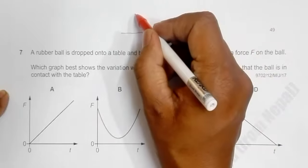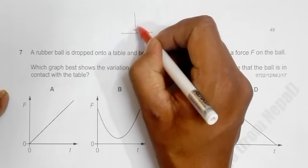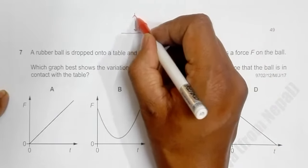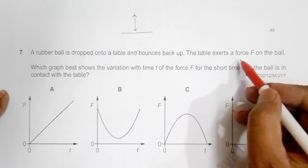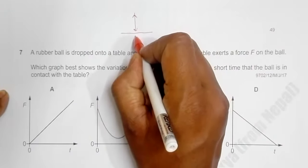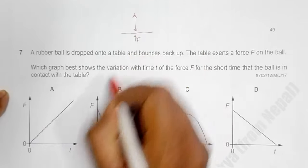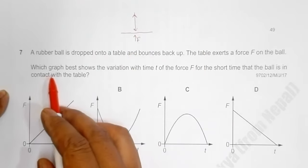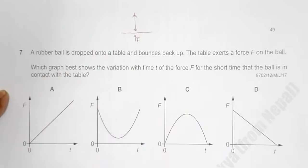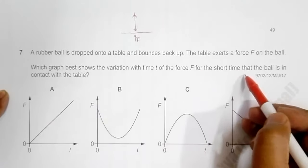The ball bounces back. The table exerts a force F on the ball. So we have to find which graph best shows the variation with time t of the force F for the short time that the ball is in contact with the table.